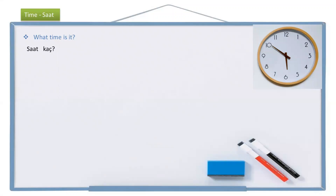And the answer for this question is, for example, it is 8 o'clock. To write this answer, we start with saat — the time is 8, sekiz. We don't write 'a clock' or anything extra, we just say it is 8. Saat sekiz. It is 9 — saat dokuz. It is 5 — saat beş. It is that simple.